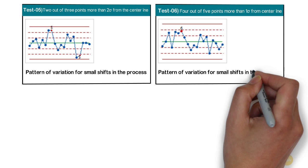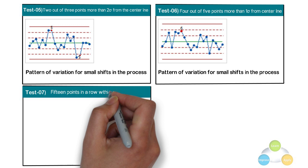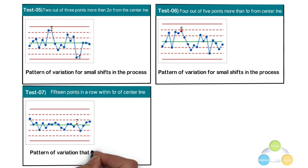Test 7: 15 points in a row within 1 sigma of center line on either side. Test 7 identifies a pattern of variation that is sometimes mistaken as a display of good control. This type of variation is called stratification and is characterized by points that follow the center line too closely.